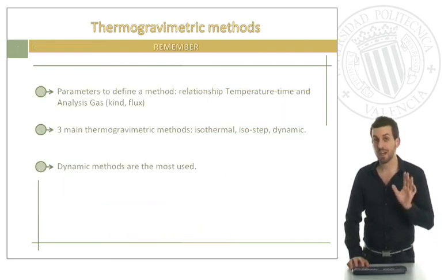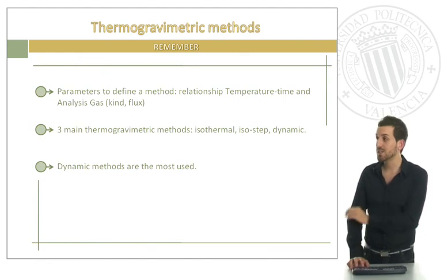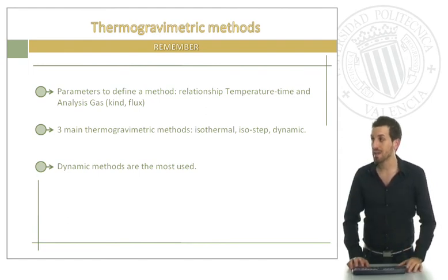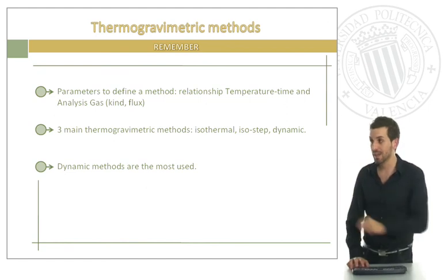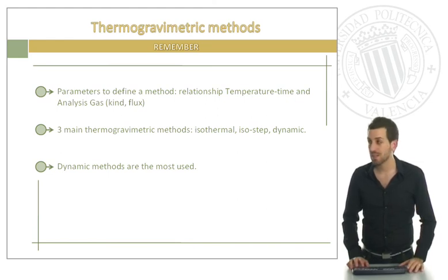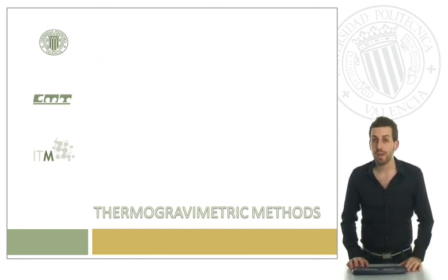Remember what we have seen here: we have defined which are the parameters to design a good method — the relationship between time and temperature, and the gas of analysis. Then we have seen the three main thermogrammetric methods: isothermal, isostep, and dynamic. Keep in mind that the dynamic methods are the most commonly used. Now it's your time to decide which is the best method for your experiments.